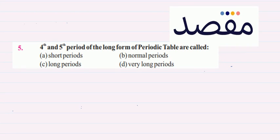Okay students, today we have the 5th MCQ: What are the 4th and 5th periods of the long form of periodic table called?